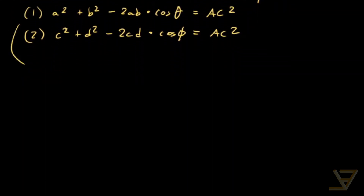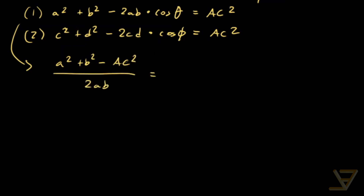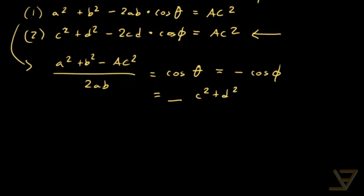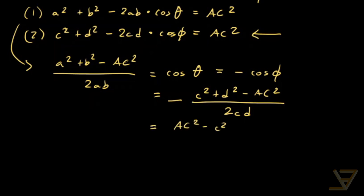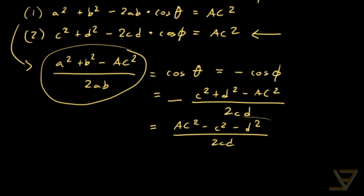From the first equation we get (a² + b² − AC²) / (2ab) = cos θ = −cos φ. From the second equation, cos φ = (c² + d² − AC²) / (2cd), so −cos φ = (AC² − c² − d²) / (2cd). Setting the left sides equal gives us an equation with these two expressions.